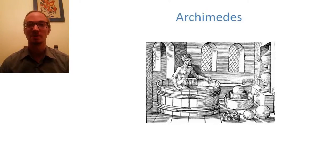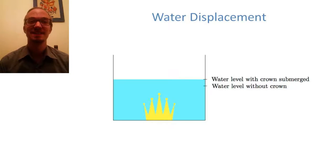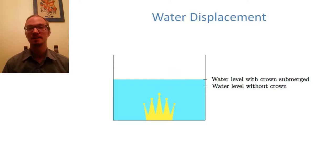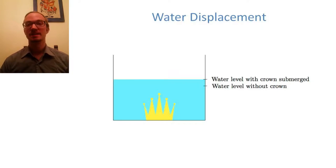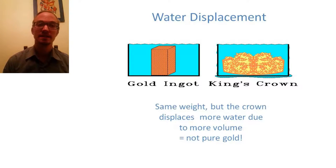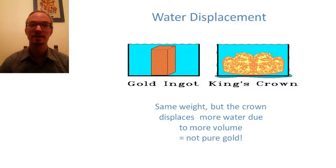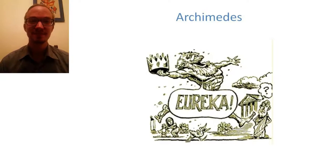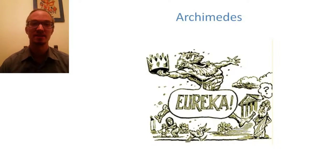As he noticed the water spilling out of the bathtub, it dawned on him what was happening — he had discovered the principle of displacement. You can calculate the volume of any object just by putting it in a bucket of water and measuring how much liquid is displaced. With the volume and the weight of the crown, he could calculate the density and found out that silver had been mixed into it. He famously ran naked out of his bathroom into the street, yelling 'Eureka!'